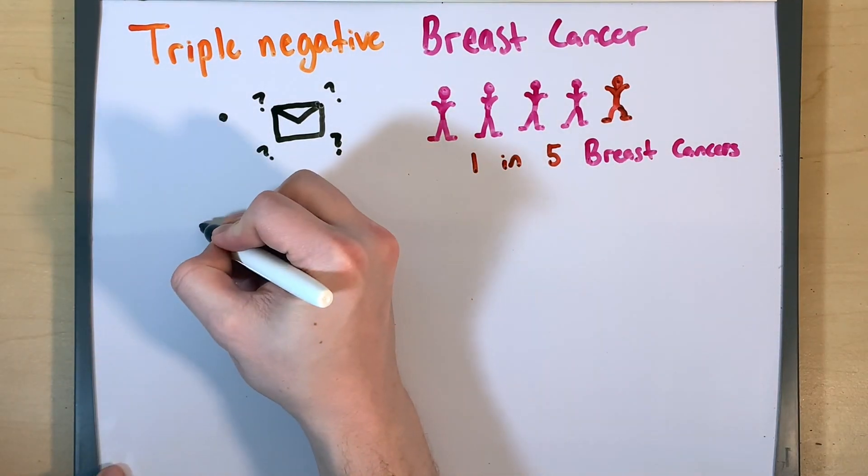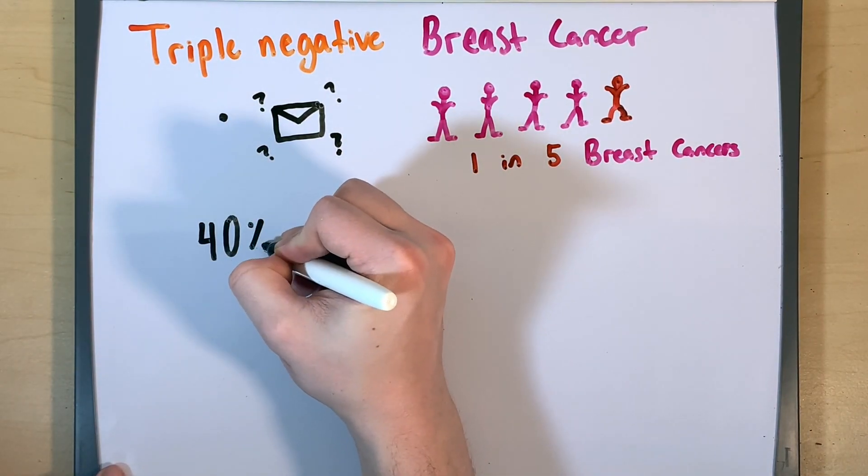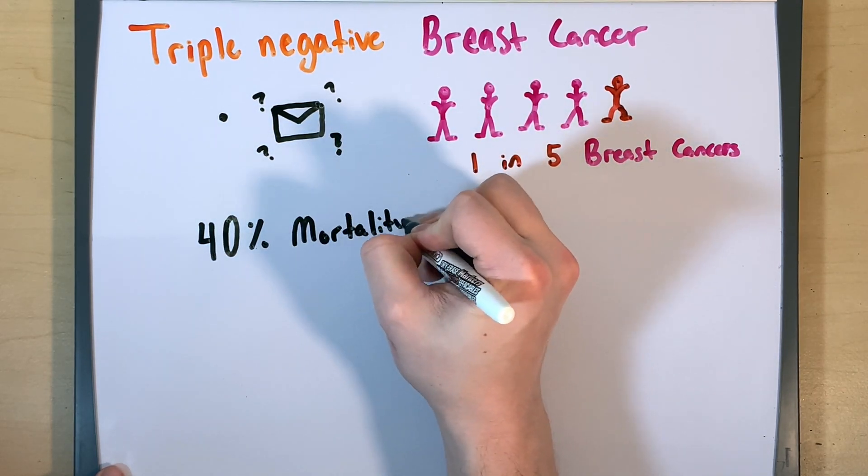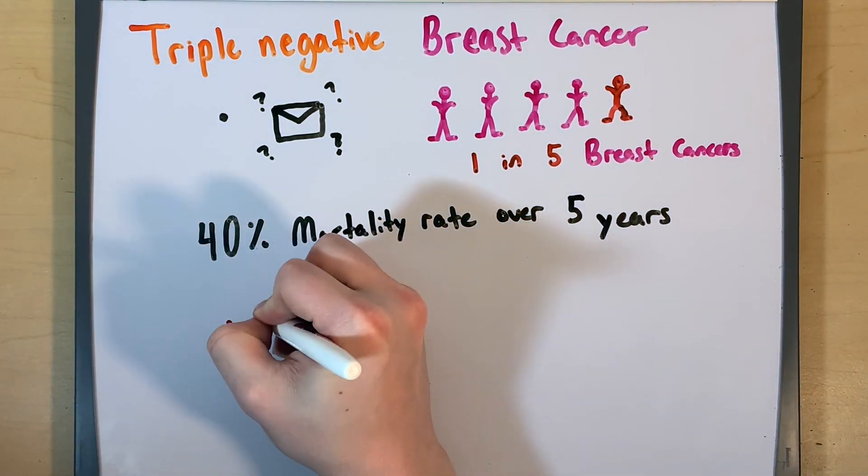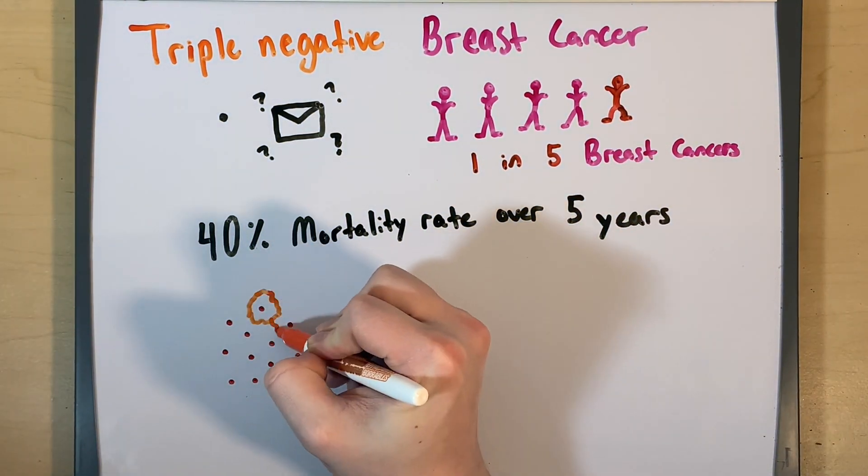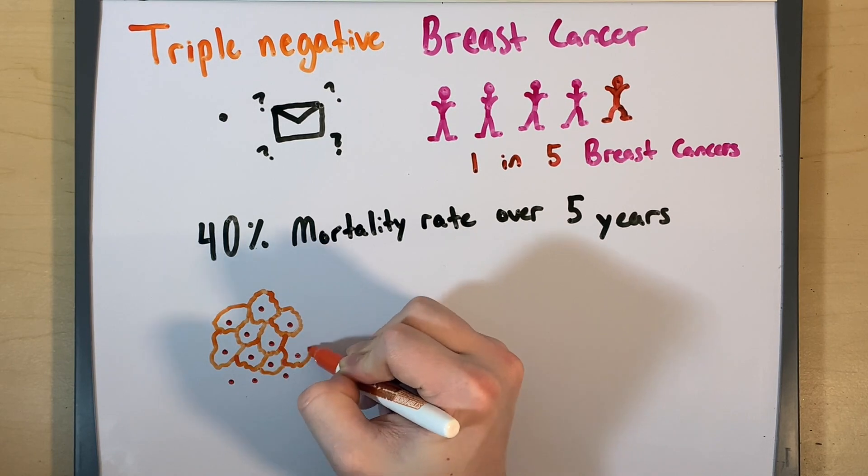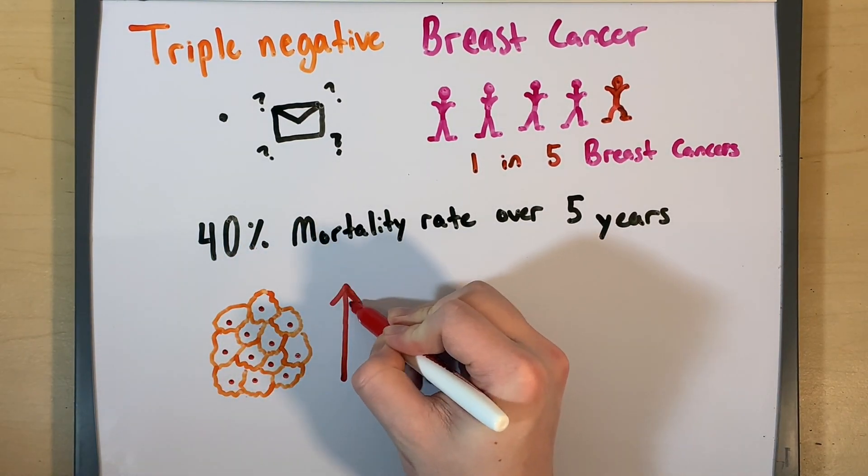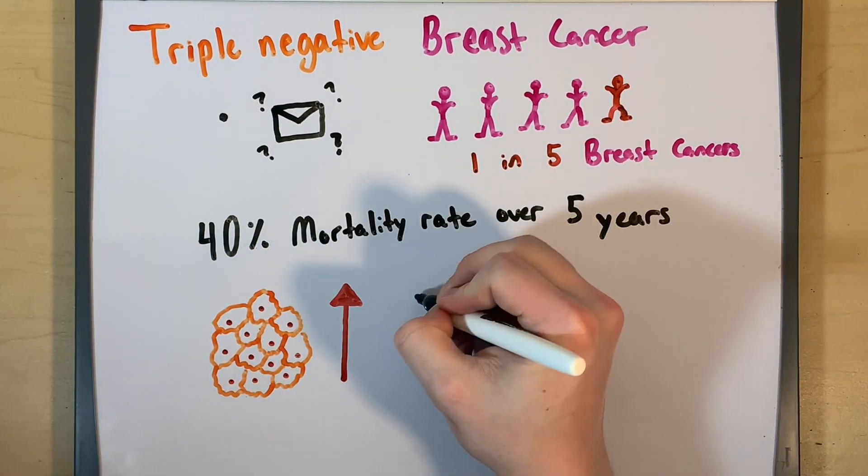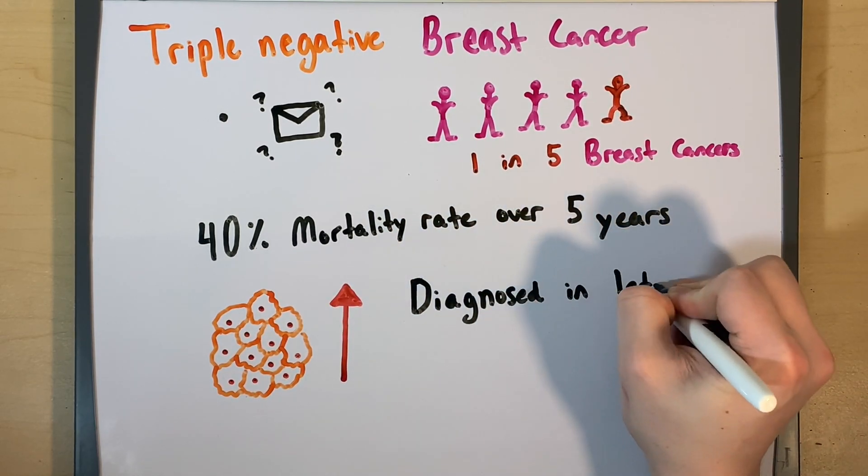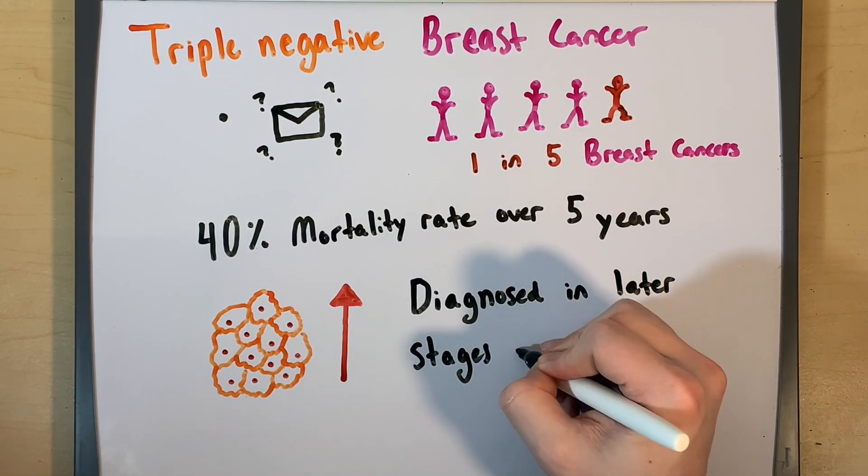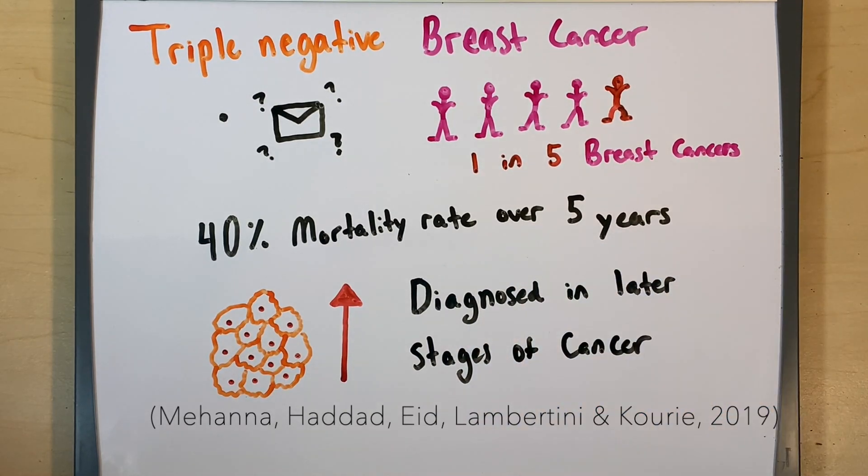Triple negative breast cancer is more dangerous and presents with a 40% mortality rate over the course of five years from diagnosis. This is due in part to the fact that triple negative breast cancer is much more aggressive and progresses at a faster rate. This unfortunately results in the diagnoses of triple negative breast cancer happening when the disease is already in a late stage, making it much more difficult to treat for the long term.